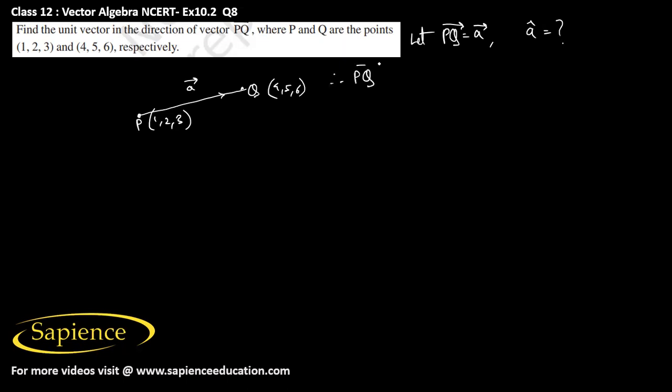Therefore here the PQ vector will be equal to OQ vector minus OP vector. We have to subtract the position vector of the point P from the position vector of point Q. OQ vector is equal to 4I cap plus 5J cap plus 6K cap and minus OP vector that is I cap plus 2J cap plus 3K cap.